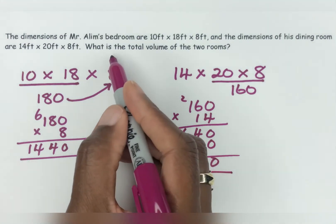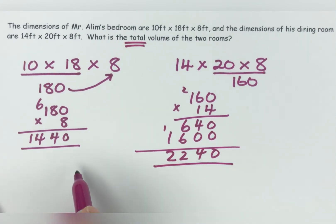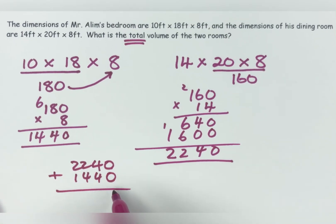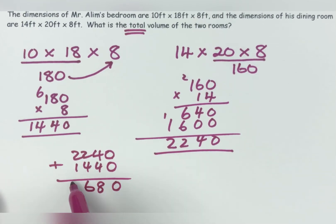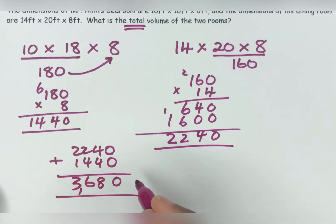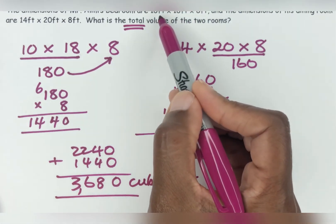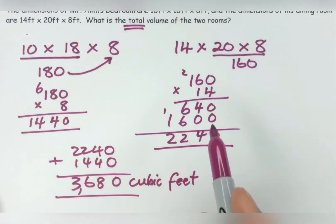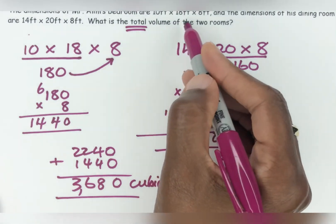And then because it says what's the total of the two rooms, you just add these two together: 2,240 plus 1,440. That gives us 3,680 cubic feet. Because when you multiply volume, volume is three-dimensional, so the unit is cubic feet — cubic to the third power.